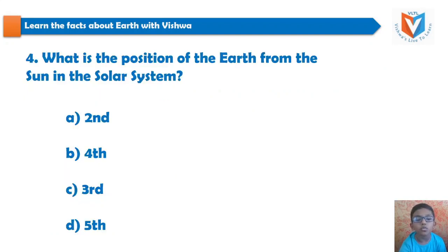Fourth question: What is the position of the Earth from the Sun in the solar system? The options are: 2nd, 4th, 3rd, or 5th.